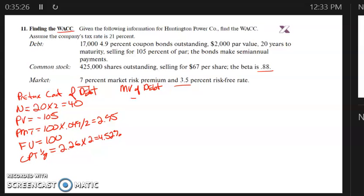So the market value of debt is going to be 17,000 times 2,000 because each one of these is worth $2,000 in face value, and then we multiply by the price. That would be 105%, which is 1.05, and we get 35.7 million.